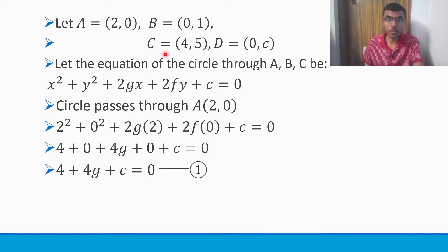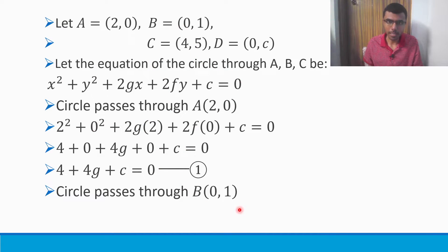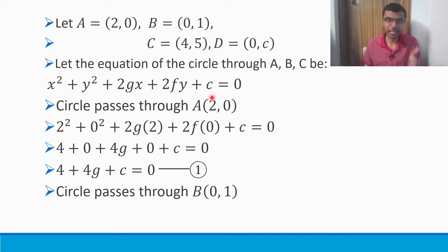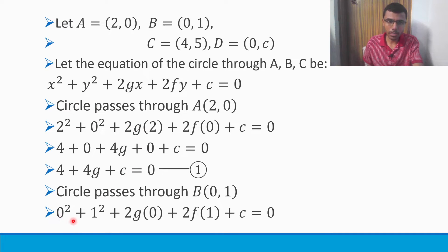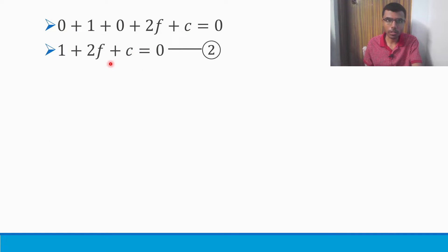The circle passes through B(0, 1) as well. In our basic equation, in place of X and Y, put the coordinates of B: 0 and 1. So 0² + 1² + 2G×0 + 2F×1 + C = 0. Now solve it. This gives 1 + 2F + C = 0. Mark it as equation 2.